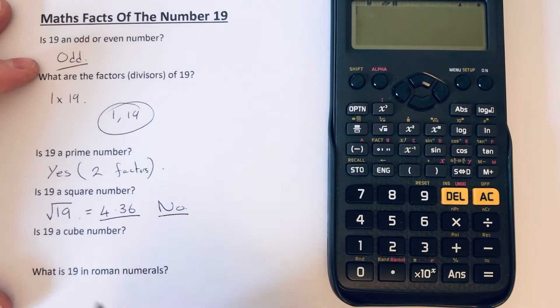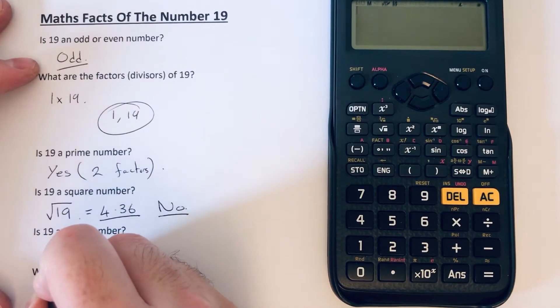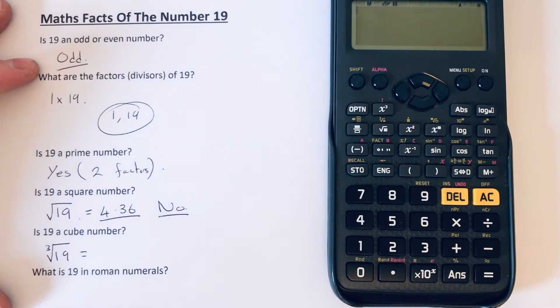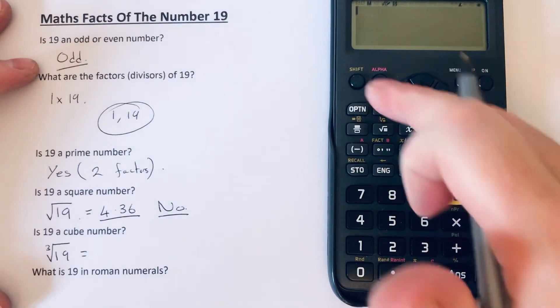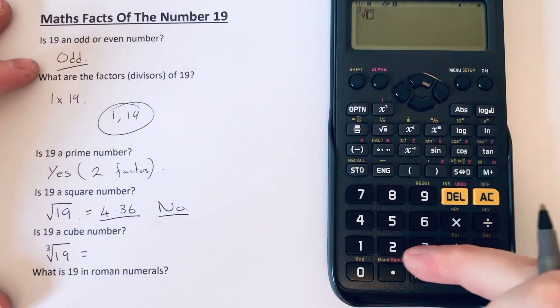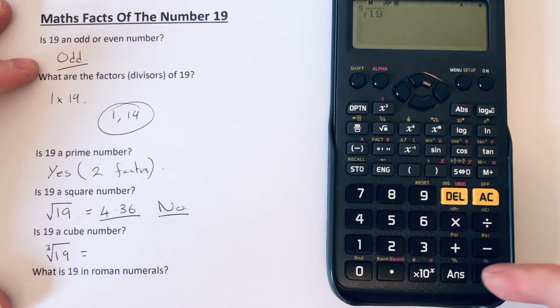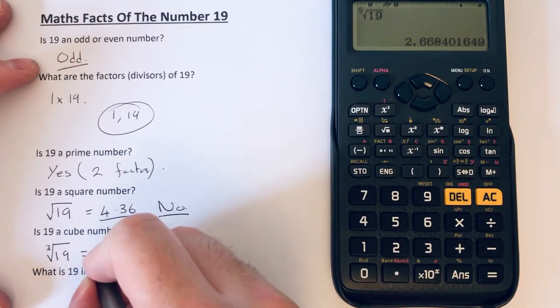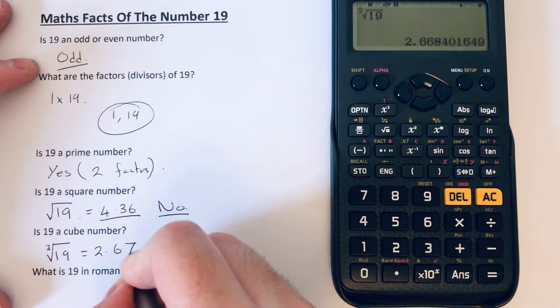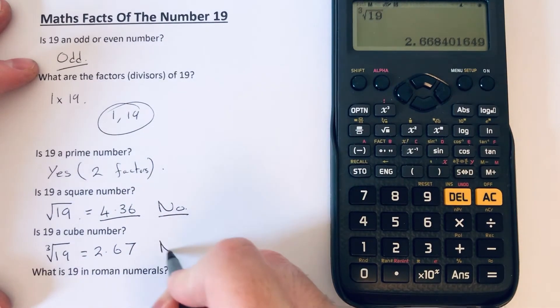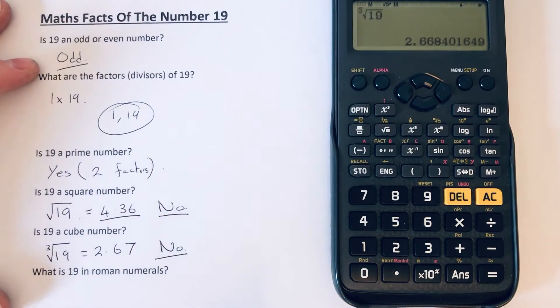Is it a cube number? So like the square number, we should be able to cube root it to give a whole number. So we get 2.67. So again, the answer would be no, because it needs to come out as a whole number.